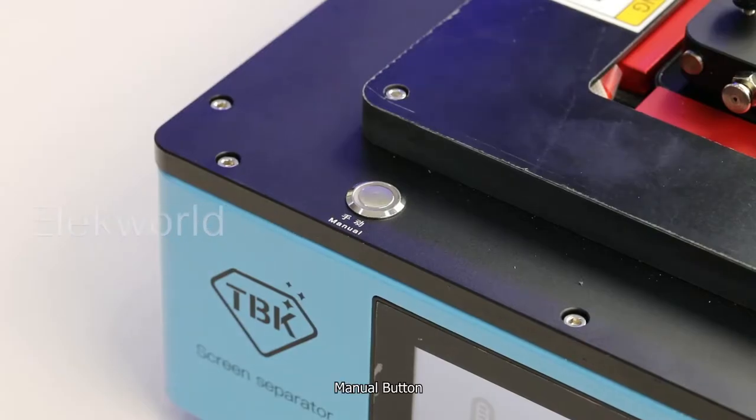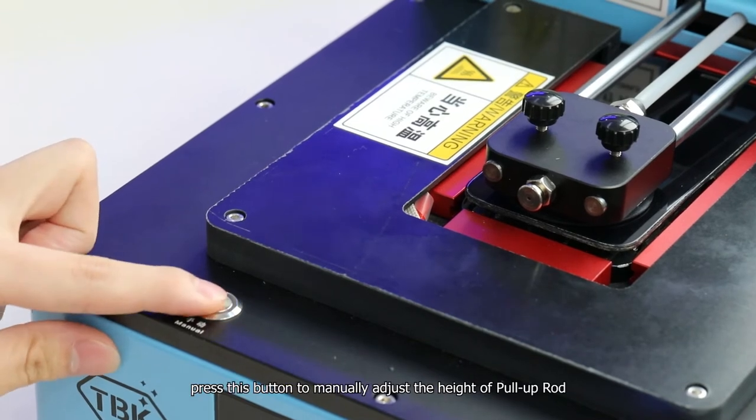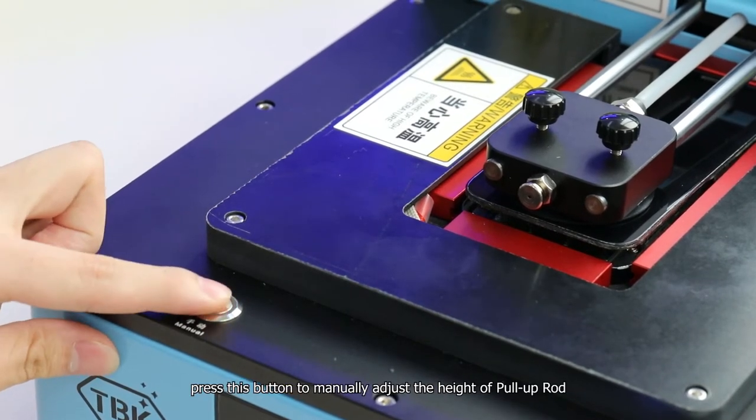Manual button: After starting and heating the machine, press this button to manually adjust the height of the pull-up rod.